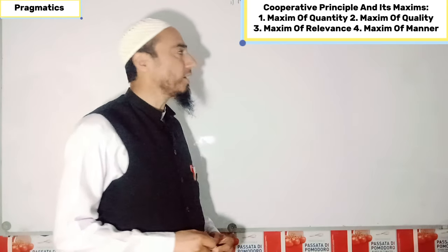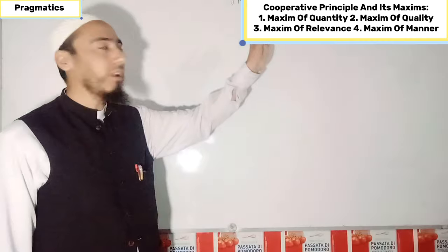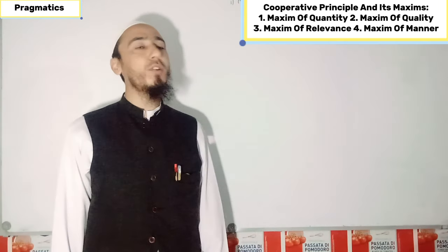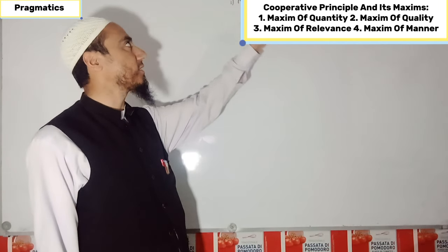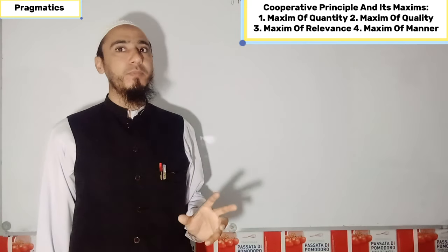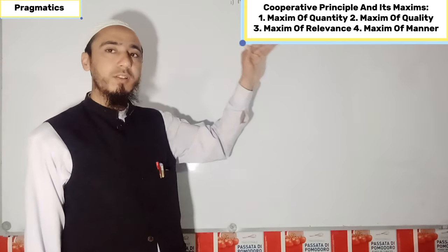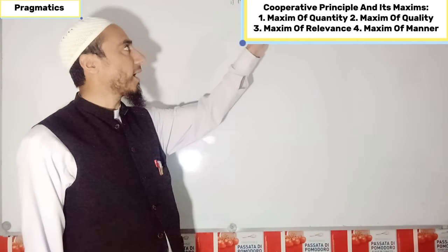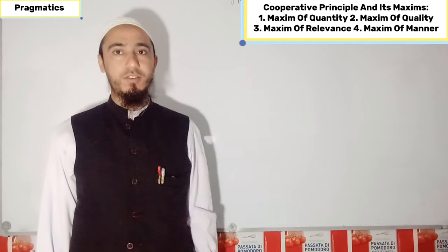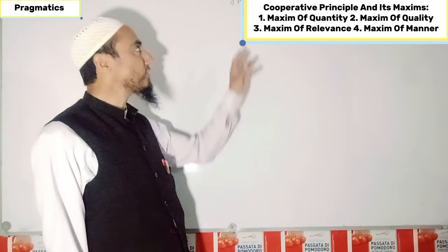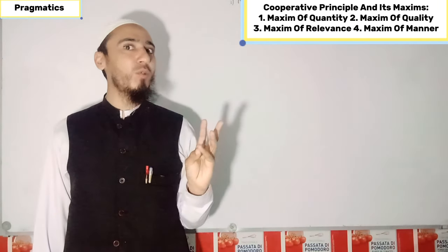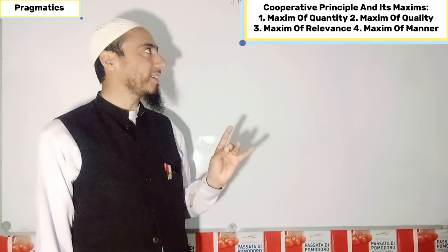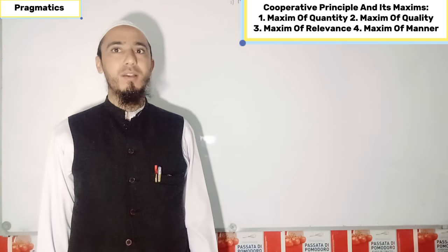When we come to the further detail and explanation of the cooperative principle, there are four maxims of conversation, which were presented by Paul Grice. The first one is the maxim of quantity, the second one is the maxim of quality, the third one is the maxim of relevance, and the last one is the maxim of manner.